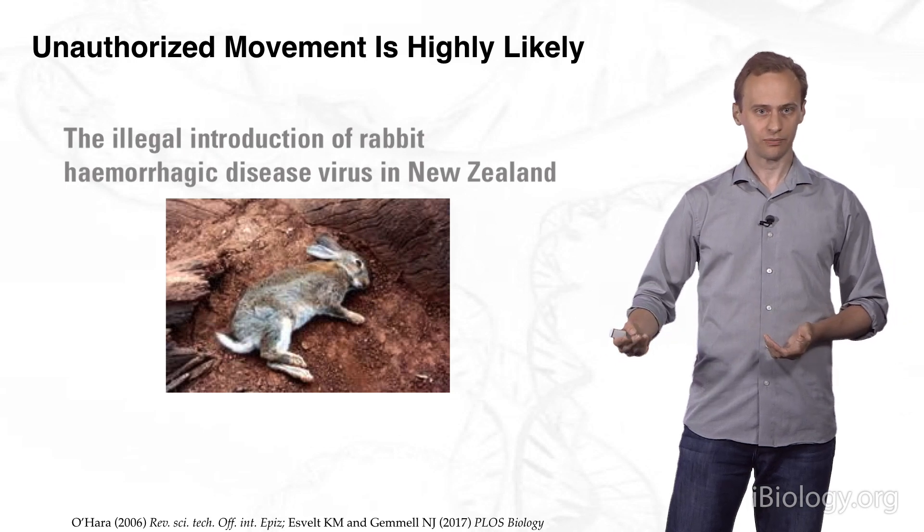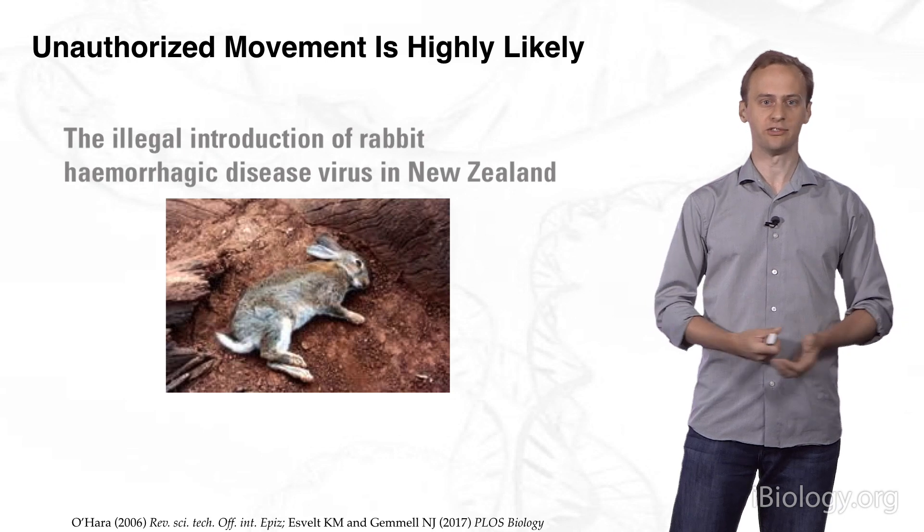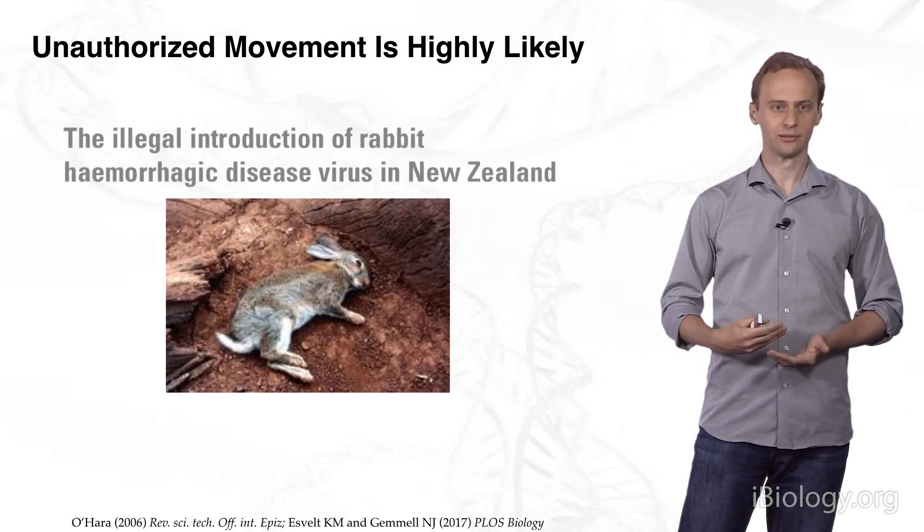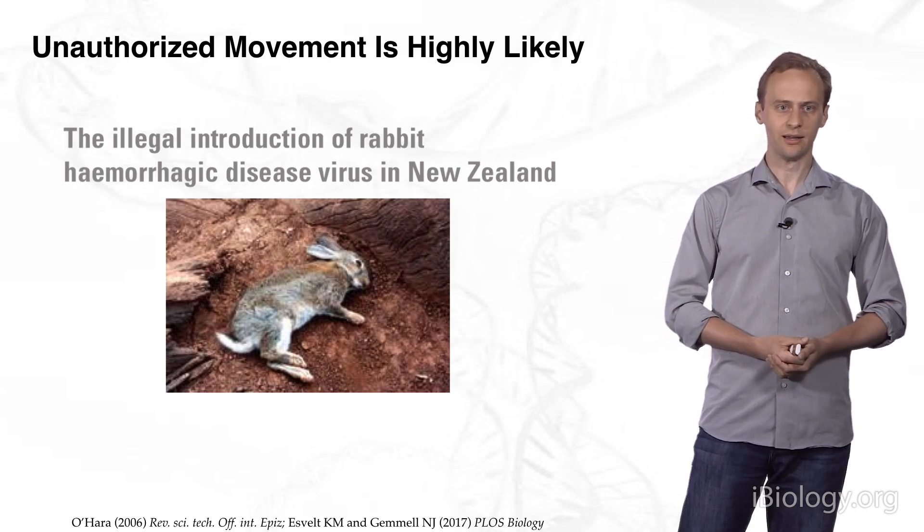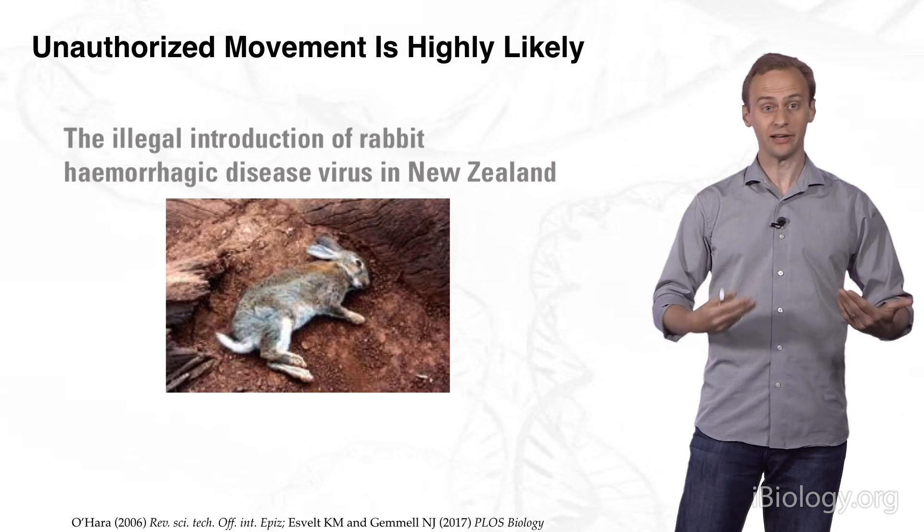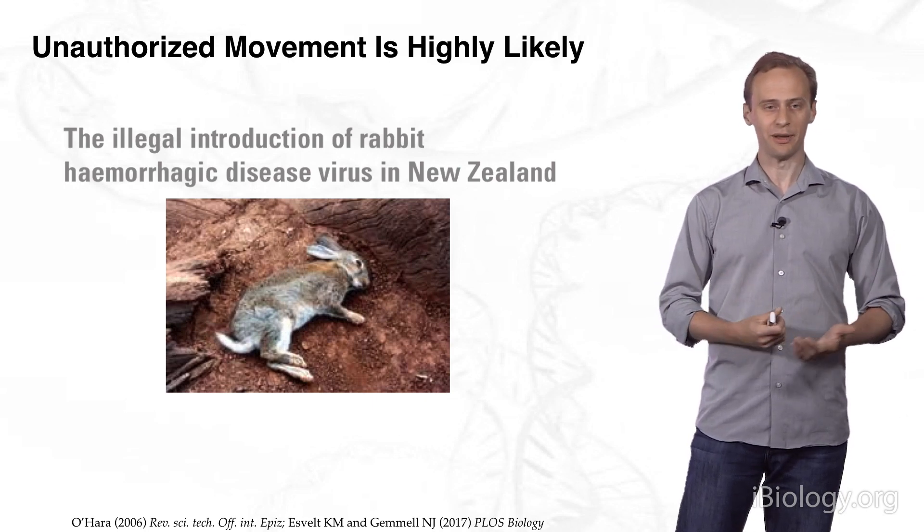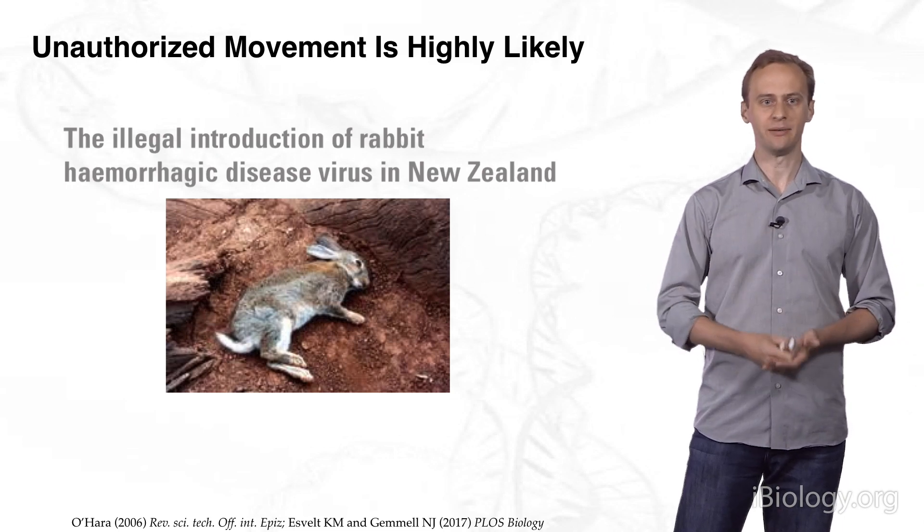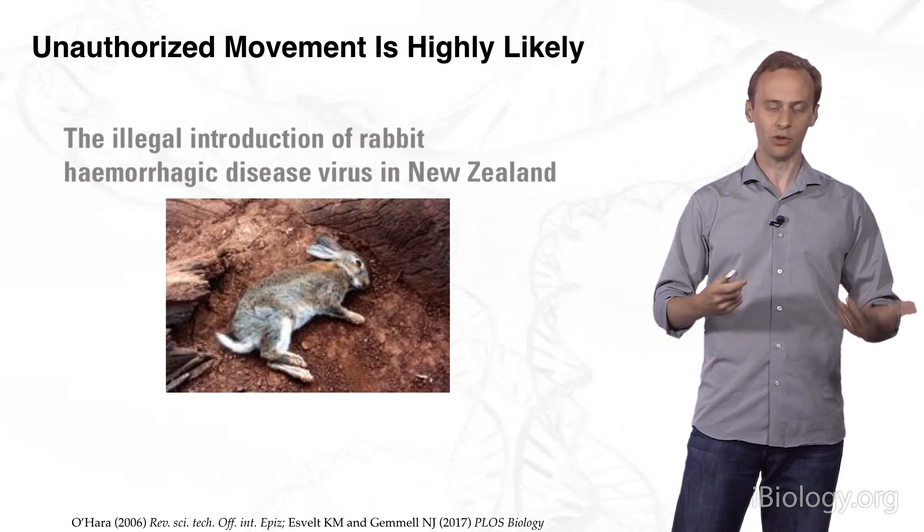In contrast, rats, which are a major proposed conservation target for suppression gene drive systems, cause over $20 billion a year, billion, not million, in the United States alone, in terms of economic damages. To imagine that people would not move a suppression gene drive for economic reasons should not even be considered. It will happen. That is how the world works. And we can't just assume that things will happen the way our models predict.